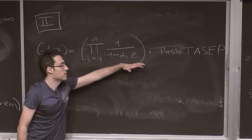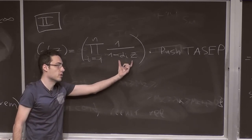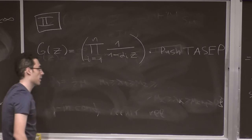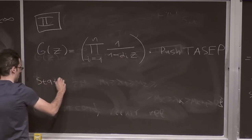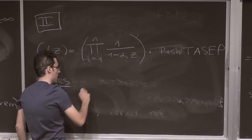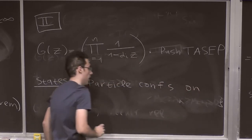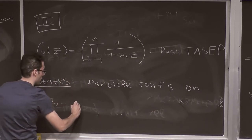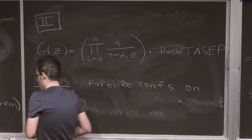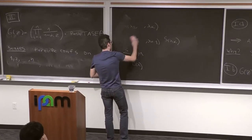So now I run the same recurrence relation, but I start with an initial condition which is no longer just a generating function in one variable z. It will be a generating function which is operator-valued in this dynamics. The states connect us with the world of interacting particle systems. States are particle configurations on positions 1, 2, up to n — there are either particles or no particles (no second-class particles).